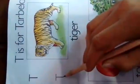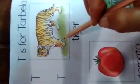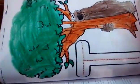Repeat after me. T is for Tiger. T is for Tiger. Okay student, now let's start our homework.